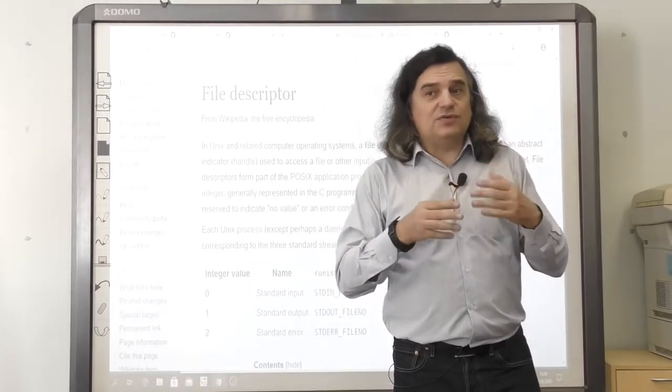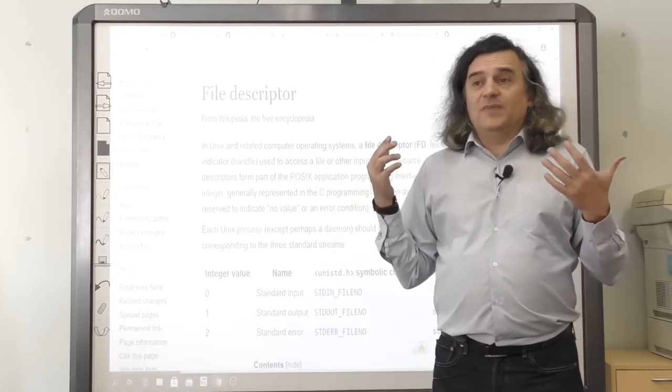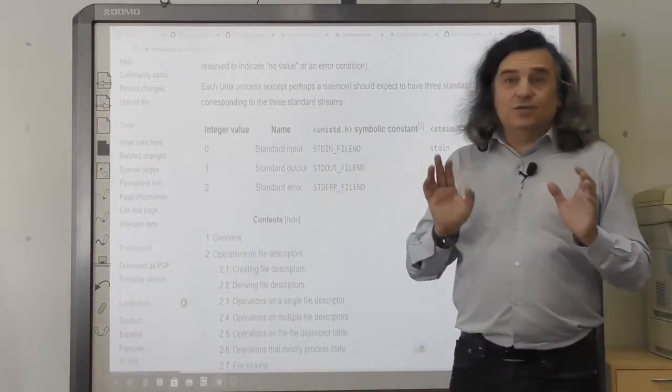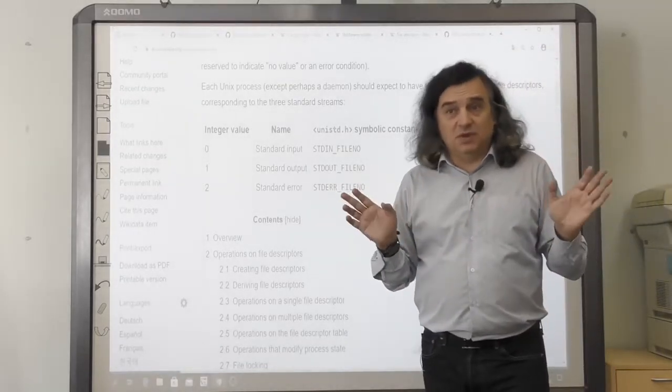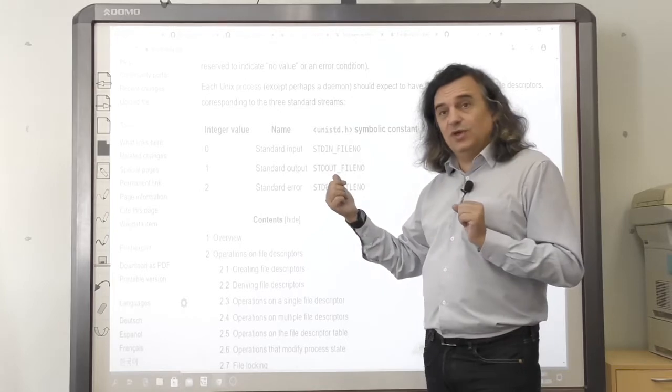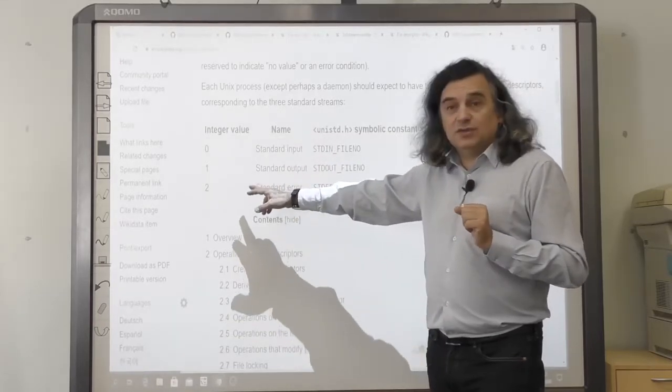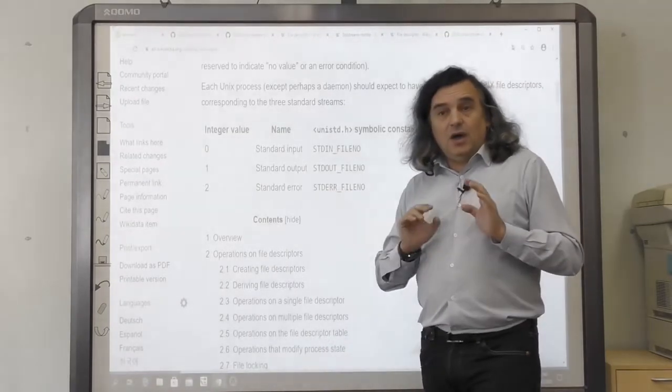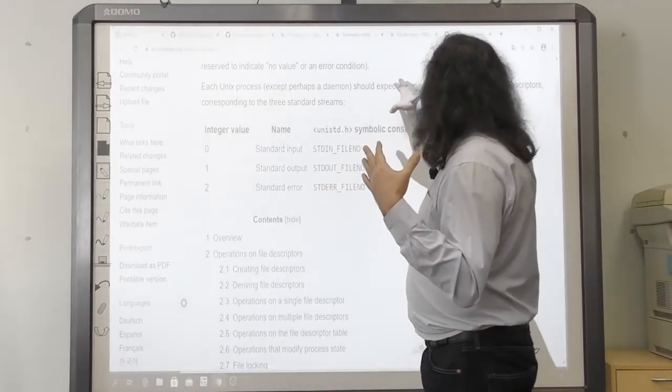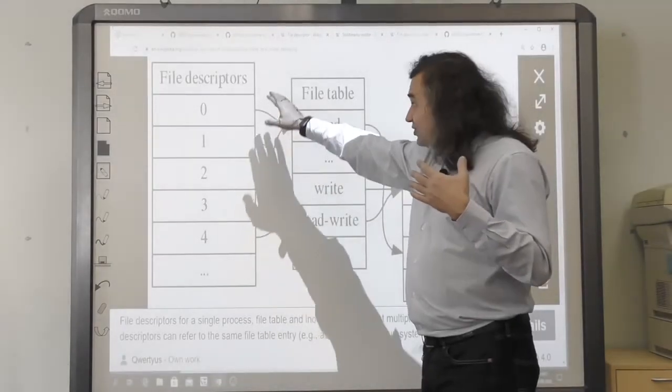Every started process on a Unix-like system has an associated open files table of file descriptors. Each Unix process, except perhaps daemon, should expect to have three standard POSIX file descriptors corresponding to the three standard streams: 0 standard input, 1 standard output and 2 standard error. All the numbers are just positions in table of file descriptors.